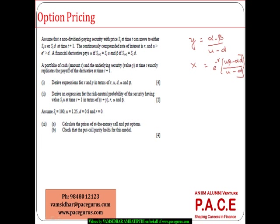So as a quick summary: y equals (alpha minus beta) divided by (u minus d), and x equals e^(minus r) times (u·beta minus alpha·d) divided by (u minus d). This is the replicating portfolio — x is the cash to hold and y is the value of the underlying security to hold. Now derive an expression for the risk-neutral probability of the security having value St·u at time t plus 1, in terms of x plus y, r, alpha, and beta.